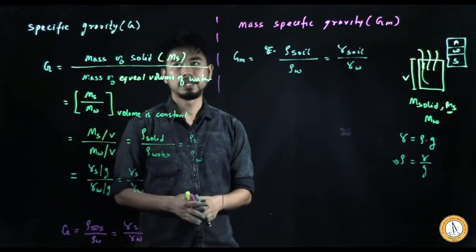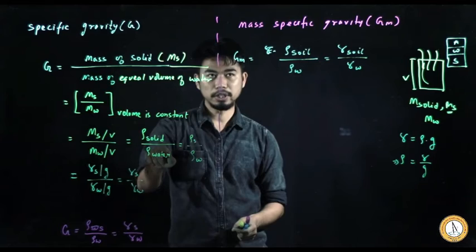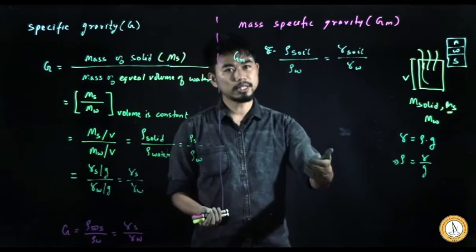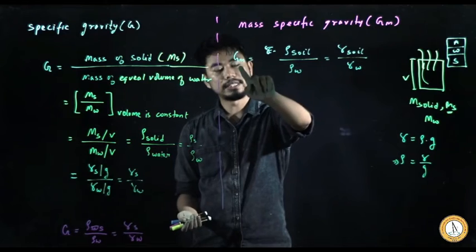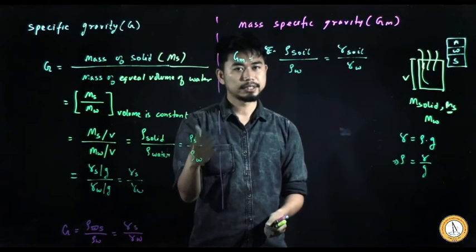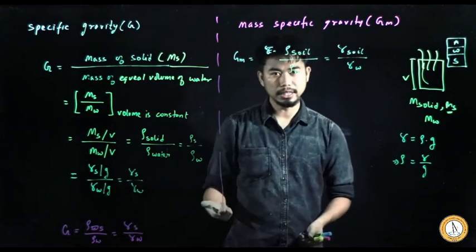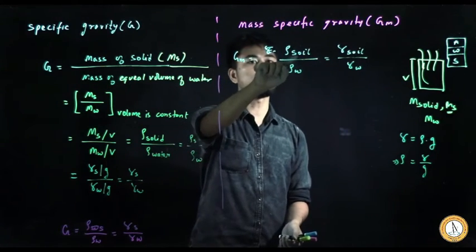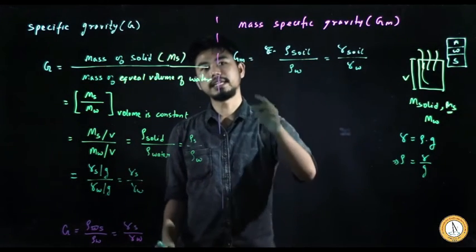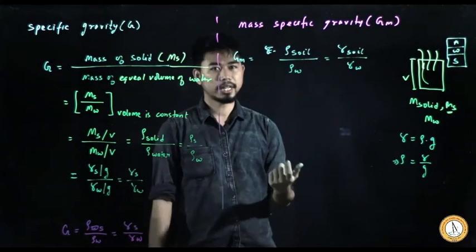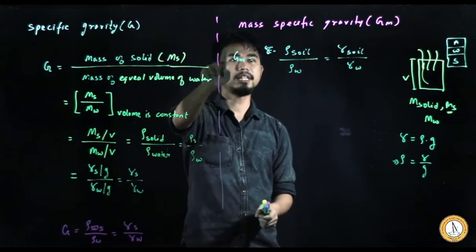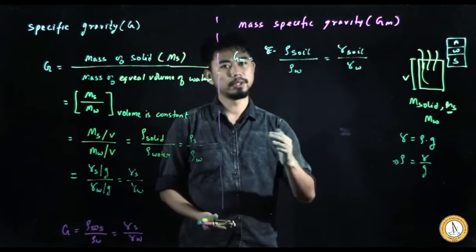The key difference: specific gravity G is related to the solid, while mass specific gravity Gm is related to the soil mass. The unit weight of the soil can change — if water is added, the mass increases so Gm increases. Therefore, Gm is not a constant value; it changes with the addition or removal of water. G always remains constant, but Gm does not.